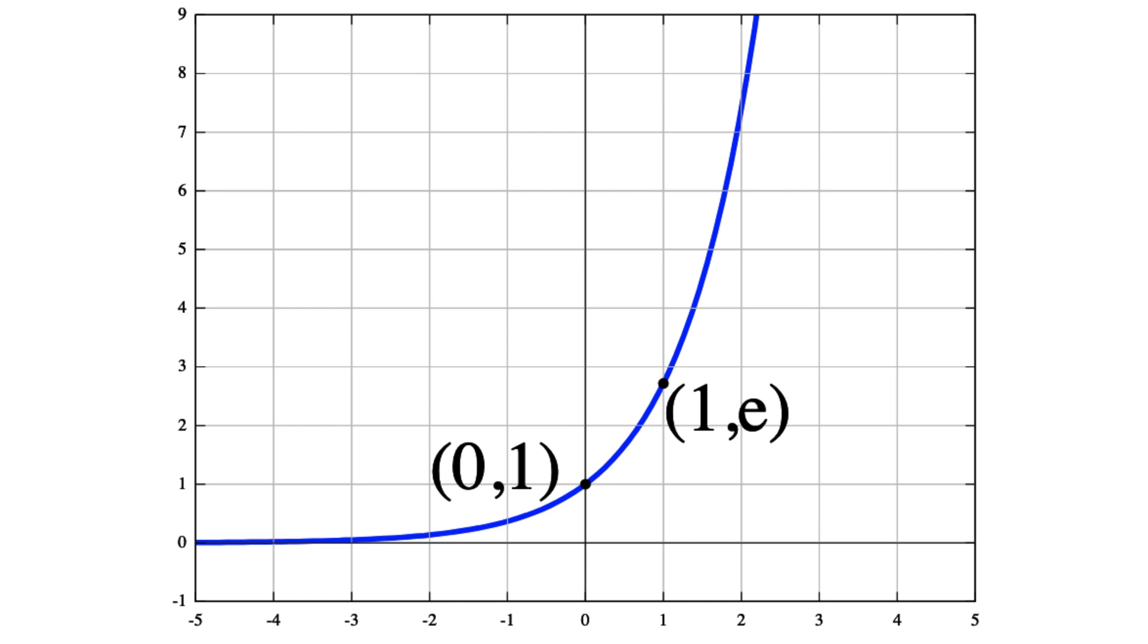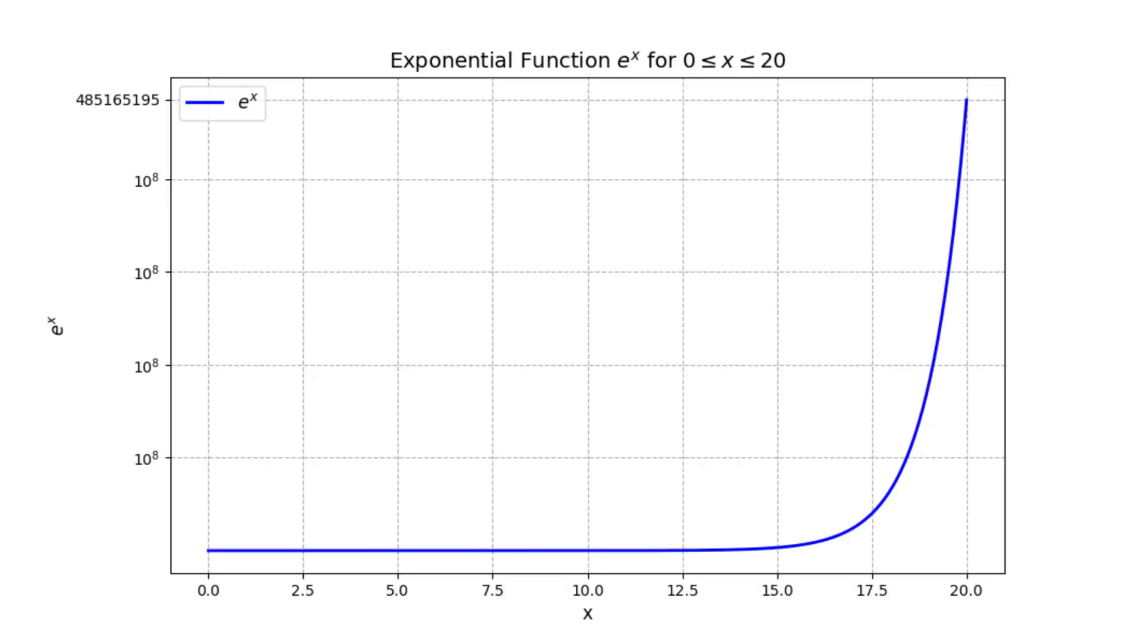Exponential function grows very quickly. e to the 10th is almost 22,000, and e to the 20th is already more than 400 million. But it is just the beginning of the hierarchy of rapidly growing functions.